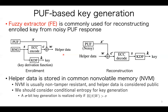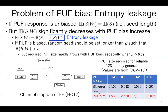In other words, we should consider the conditional entropy of random seed given helper data. The conditional entropy should be greater than sigma for realizing sigma-bit key generation. If PUF response is completely unpredictable for the attacker, the conditional entropy is equal to the length of random seed, and sigma-bit key generation is easily realized using a sigma-bit random seed. However, the conditional entropy significantly decreases with increase of PUF bias. This decrease of conditional entropy is called entropy leakage. Entropy leakage is sometimes critical because of the difficulty in fabricating a completely unbiased PUF. Intuitively, entropy leakage is explained using the wiretap channel model for FE presented at CHESS 2017.